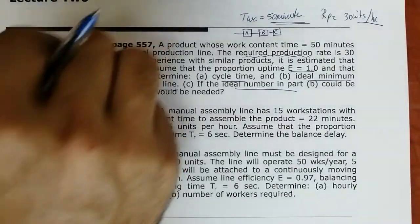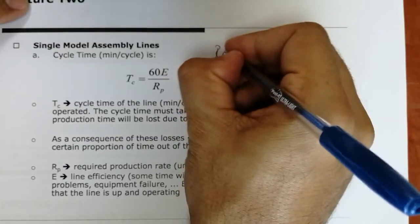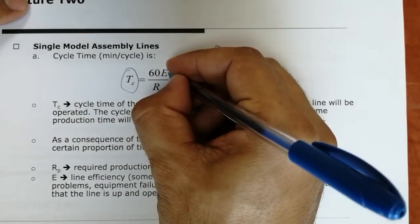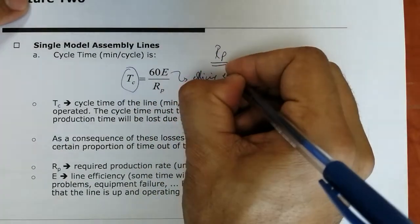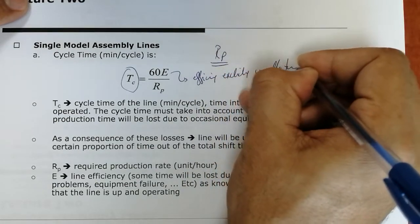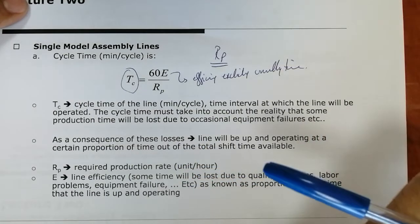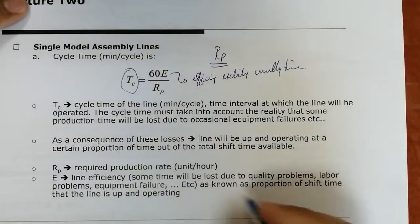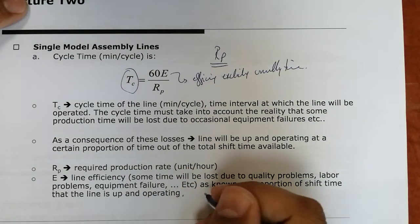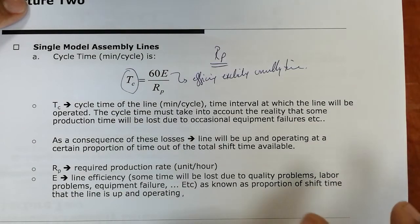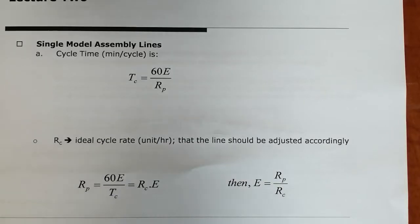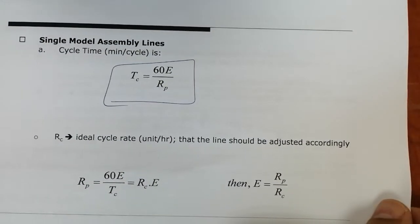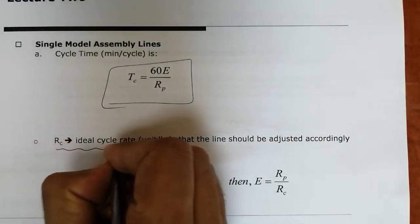After calculating RP — which is DA over 50 times SH times hours per shift — we know cycle time TC equals 60E over RP. E is the efficiency excluding unavailable time. After removing unavailable time, this is the efficiency of the system. If efficiency is 50%, half of the time is unavailable due to quality problems, labor problems, equipment failure, and other variables. RC is defined as the ideal cycle rate that the line should be adjusted to — the best condition achievable.